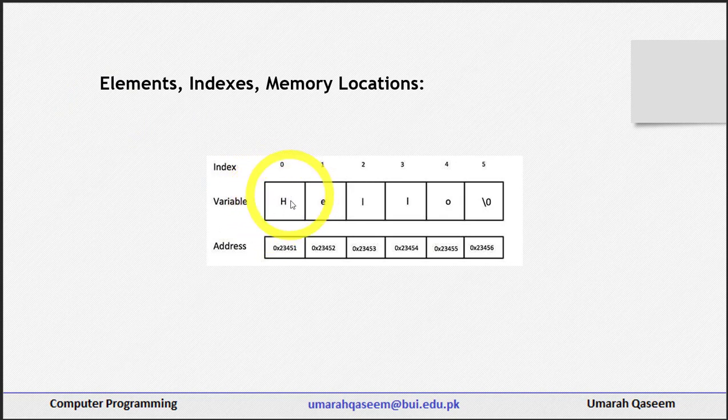Elements are the values which are stored in the array. So 'h' is an element, these are all elements, and backslash is also an element. This is the first element, this is the second element, third, fourth, fifth, and sixth. This means that this array has six elements.